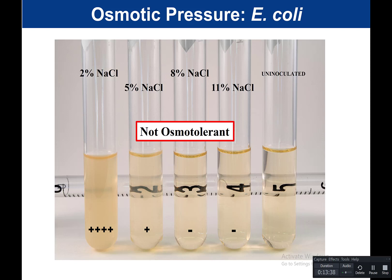The point of these two activities is to show you that bacteria have different environments in which they can grow. They have an optimal environment and a range of environments they can tolerate. This concludes our experiment looking at the effect of pH and osmotic pressure on microbial growth.